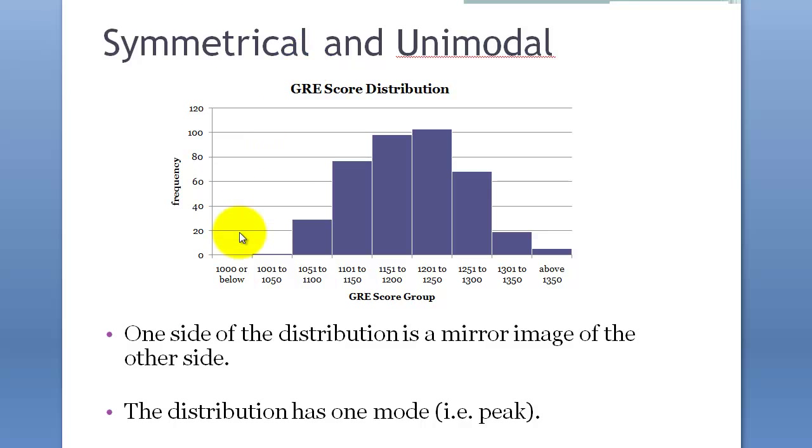Symmetrical and unimodal. Uni means one. A unimodal distribution is a mirror image on each side. In other words, it's symmetrical.